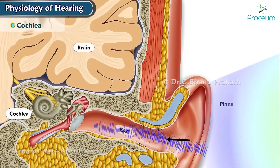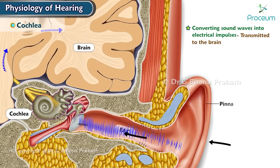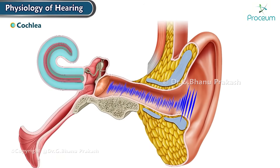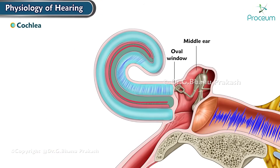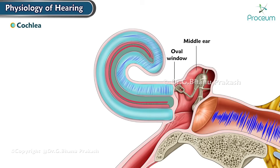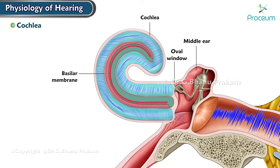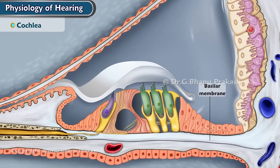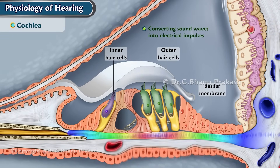The cochlea is responsible for converting sound waves into electrical impulses that are transmitted to the brain, where they are interpreted as sound. Sound waves enter the cochlea through the oval window, a membrane that separates the middle ear from the inner ear. As the sound waves travel through the fluid in the cochlea, they cause the basilar membrane to vibrate. The basilar membrane is a thin, flexible structure that runs the length of the cochlea and contains thousands of tiny hair cells responsible for converting sound waves into electrical impulses.